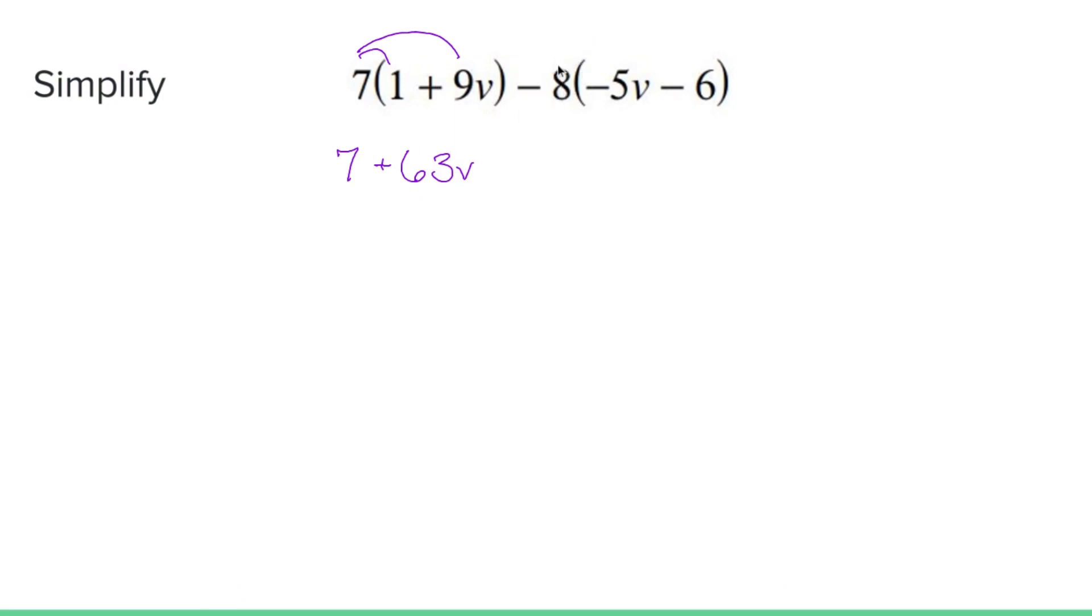Now be very careful. You're not distributing 8. You're distributing negative 8. So you have negative 8 times negative 5, which is plus 40v, and negative 8 times negative 6, which is plus 48.